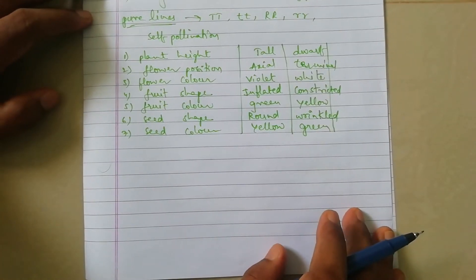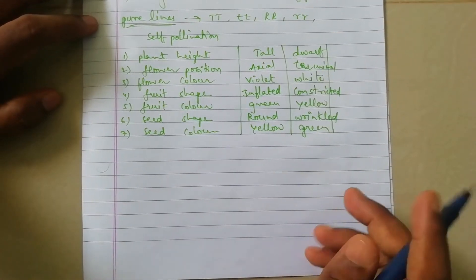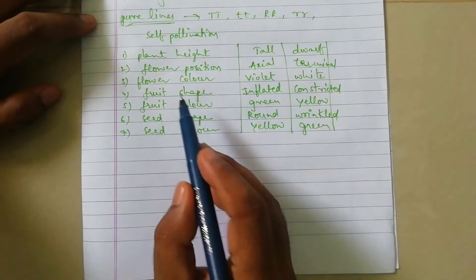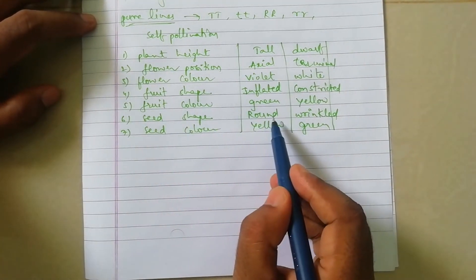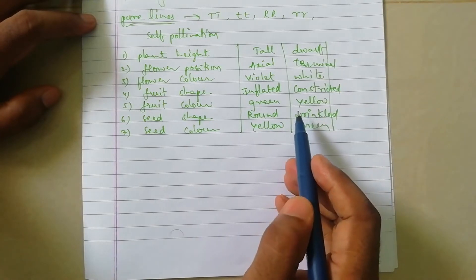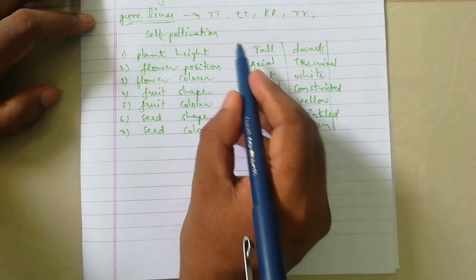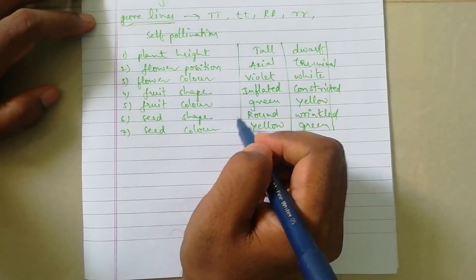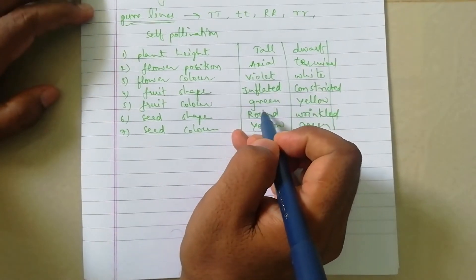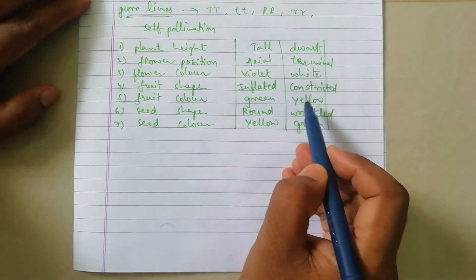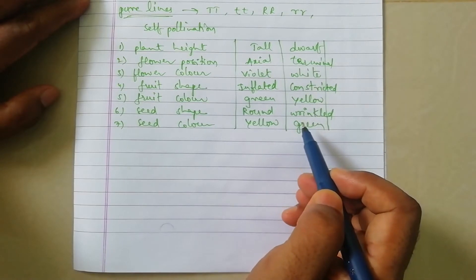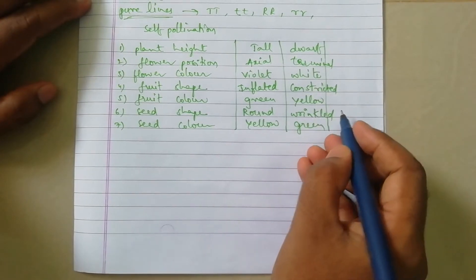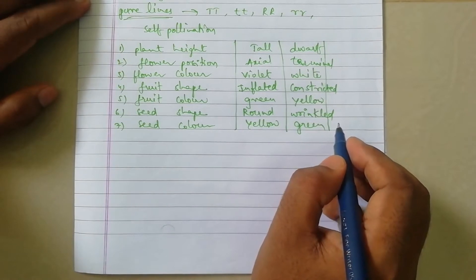In our previous class we discussed Mendel's characters — seven characters in which we built two types of traits in each character. These characters are called dominant characters, which means they are expressive, and non-expressive characters, which are called recessive characters. Now we are going to discuss an experiment: the monohybrid cross.